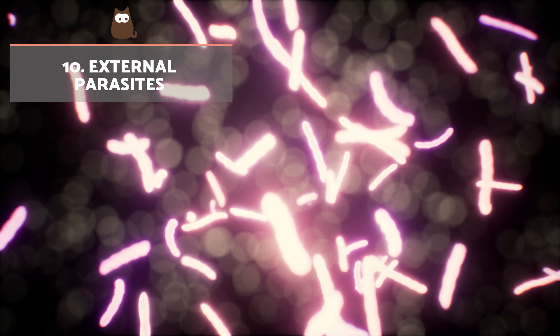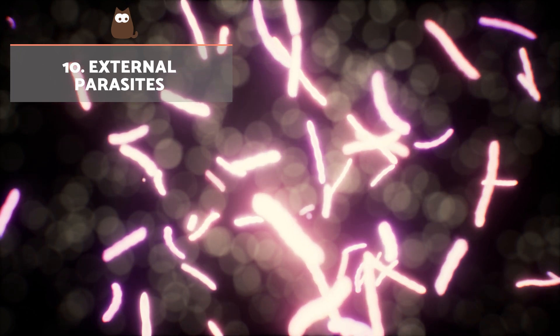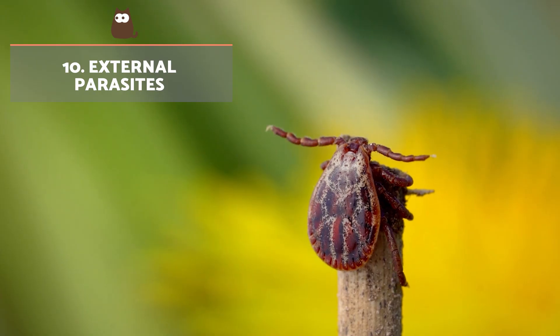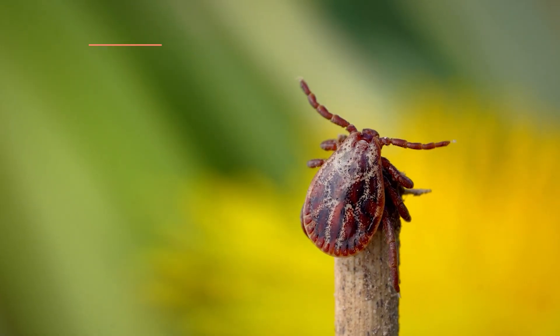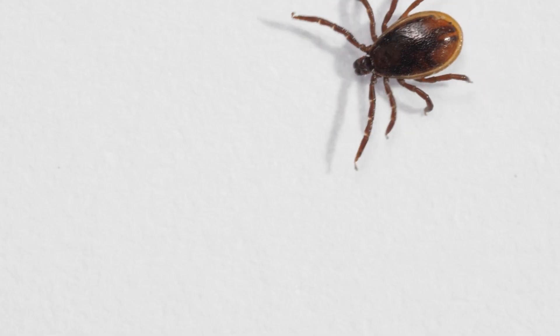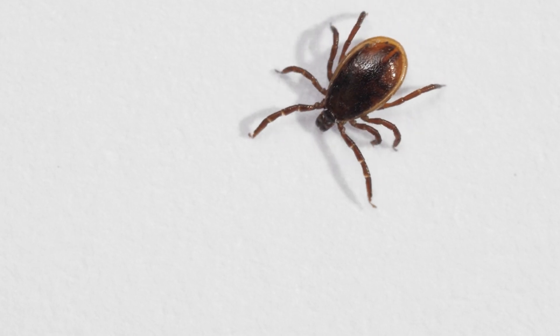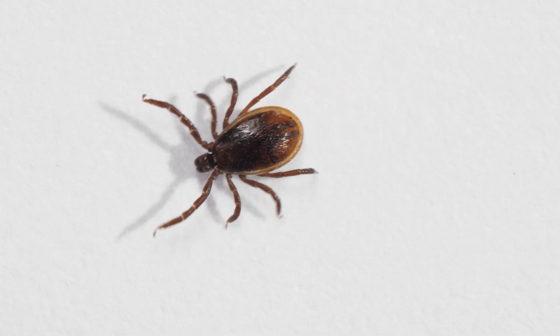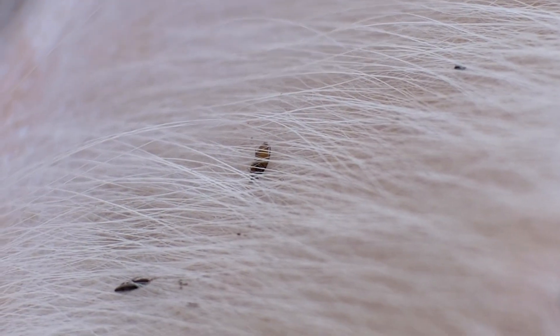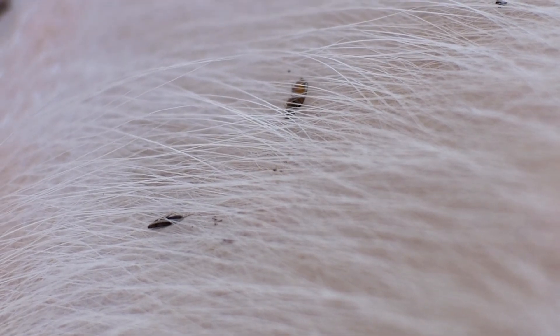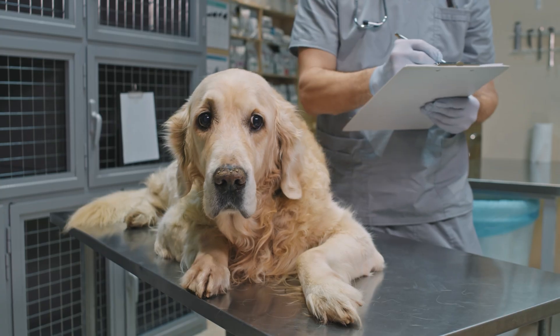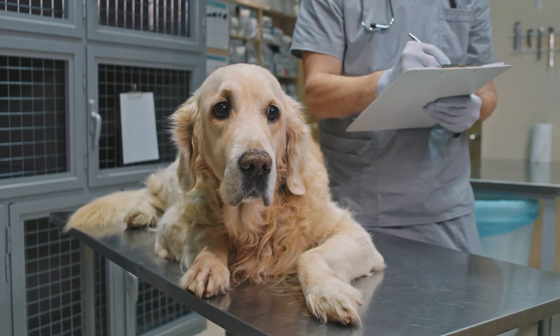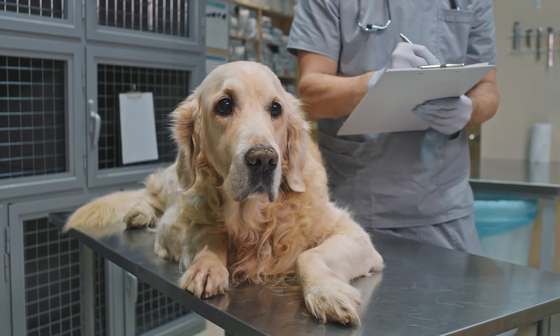External parasites. Fleas, ticks and lice are parasites that can easily pass from our dog to our skin. We can suffer the contagion of various diseases through the bites of these parasites, since they are carriers of various pathologies. This is why it's essential to follow both internal and external deworming schedules closely.